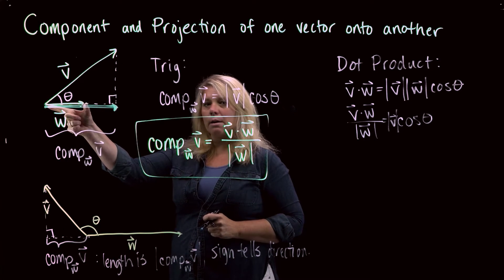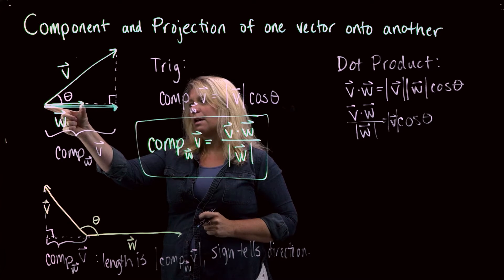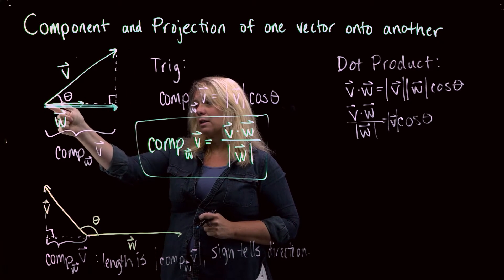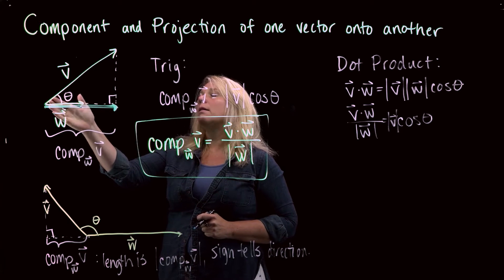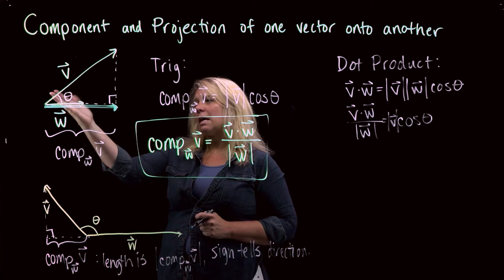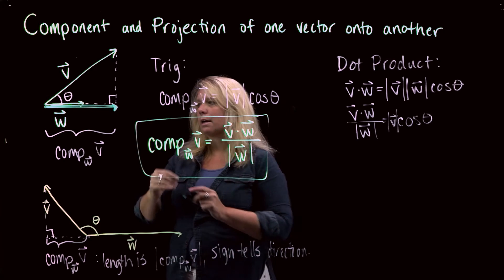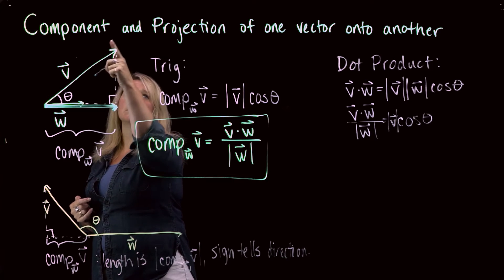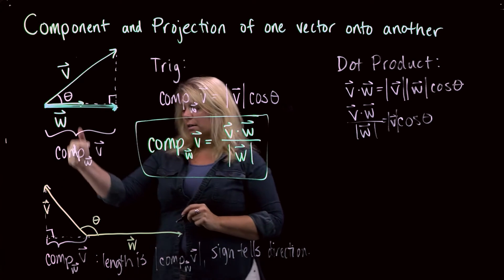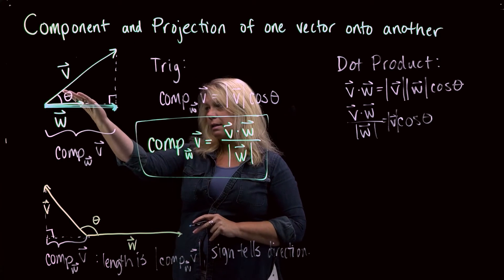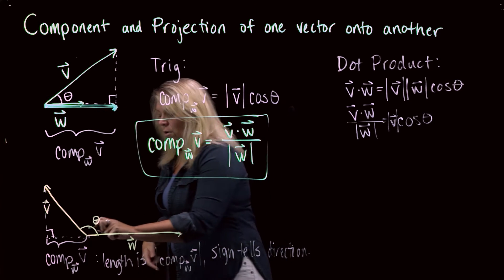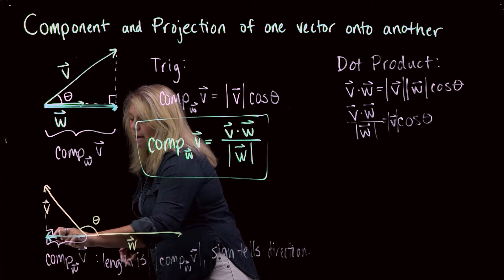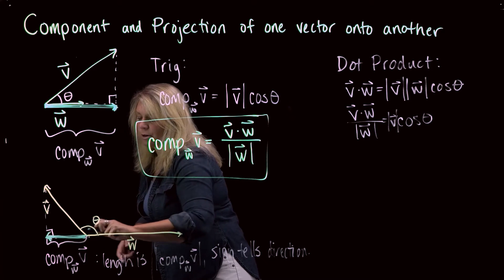My vector W here was a shorter vector, and now what I want to construct is a vector along W that represents how much of V is lined up with W. This new vector is called the projection of V onto W, whether we have an acute or obtuse angle between the vectors.